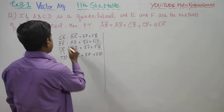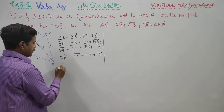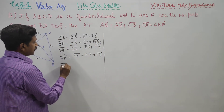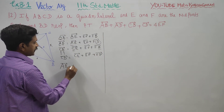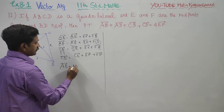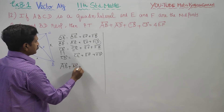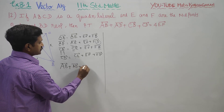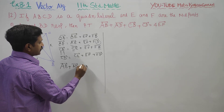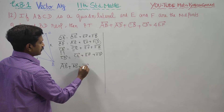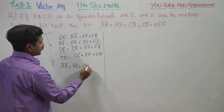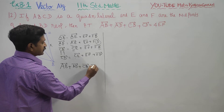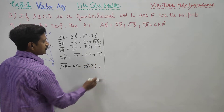I am going to add AB vector plus AD vector plus CB vector plus CD vector.